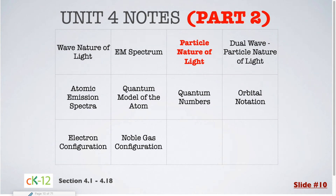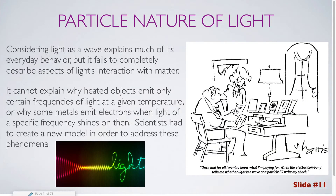In part 2 of the Unit 4 notes, we will be covering the particle nature of light. Considering light as a wave explains much of its everyday behavior, but it fails to completely describe aspects of light's interaction with matter. It cannot explain why heated objects emit only certain frequencies of light at a given temperature, or why some metals emit electrons when light of a specific frequency shines on them. Scientists had to create a new model in order to address these phenomena.